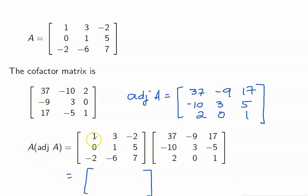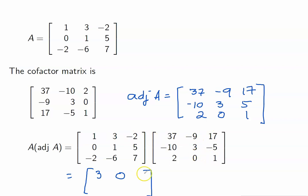For the 1-1 entry, we have 37 minus 30, so that is 7, minus 4, we get 3. For the 1-2 entry, we get negative 9 plus 9, that is 0. For the 1-3 entry, we get 17 minus 15, which is 2, minus 2, we get 0. For the 2-1 entry, we have 0, negative 10 plus 10, that is 0. The 2-2 entry is 0 plus 3 plus 0, which is 3.